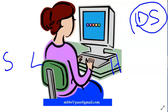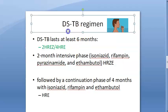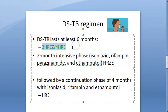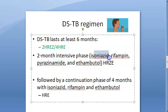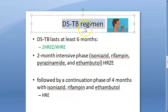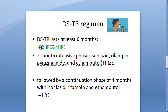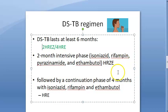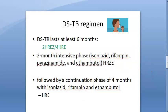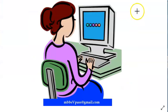The drug-sensitive tuberculosis regimen is standard: two months of HRZE (isoniazid, rifampicin, ethambutol, pyrazinamide) — the intensive phase — followed by four months of HRE (isoniazid, rifampicin, ethambutol), removing only pyrazinamide. There is no longer a category one or category two distinction; if it is drug-sensitive, this is the treatment regardless of new or previously treated status.